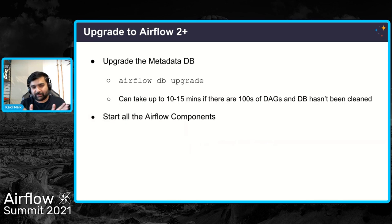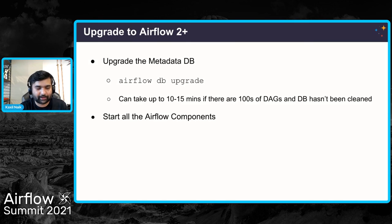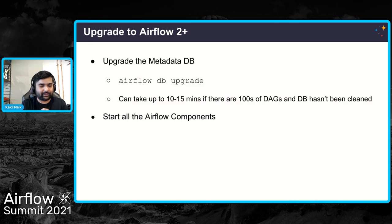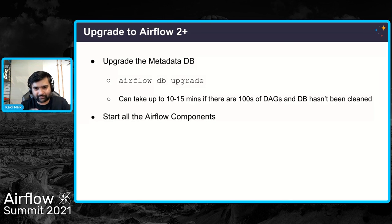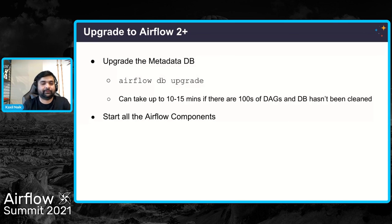Now upgrade the metadata database. Since you've already taken a backup, even if something goes wrong you can roll back. Run 'airflow db upgrade' — do not run 'airflow db init' because it will create example DAGs and connections. The upgrade can take up to 10-15 minutes if you have many DAG runs and your DB hasn't been pruned. Then you can start all your Airflow components: scheduler, worker, and web server.